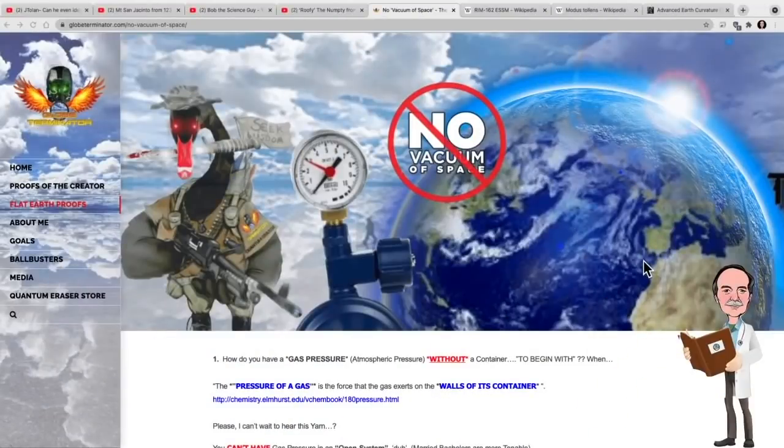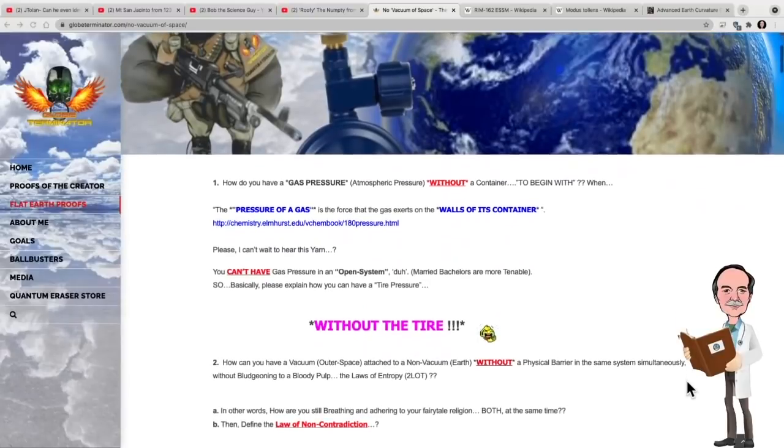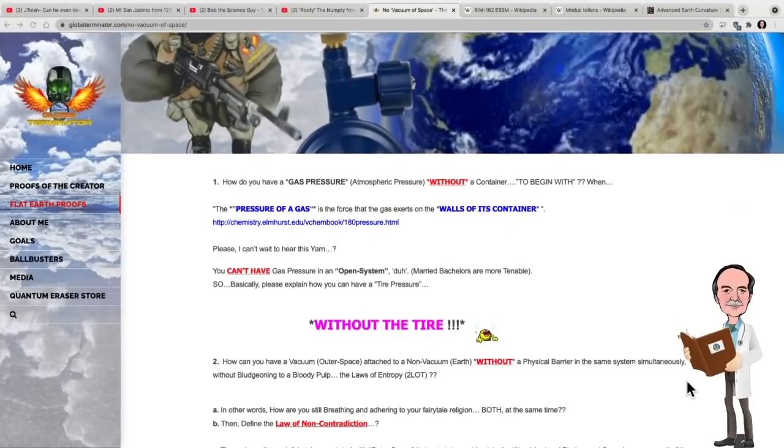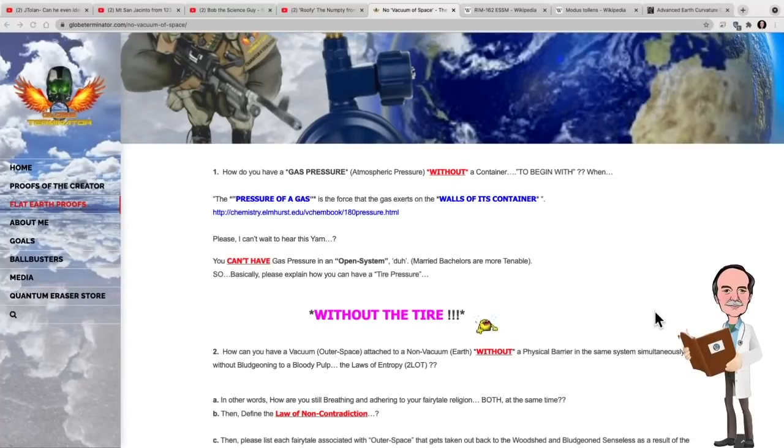Now this is my personal favorite, and that is how can you possibly have a gas pressure next to the vacuum of space without a container? Now this is the classic creationism argument against evolution, where somehow evolution and having gas pressure next to the vacuum of space are a violation of the second law of thermodynamics. We have gas pressure in our atmosphere, and we have a pressure gradient in that atmosphere.